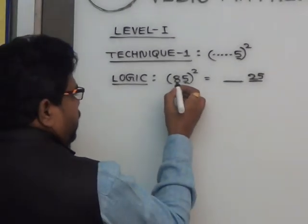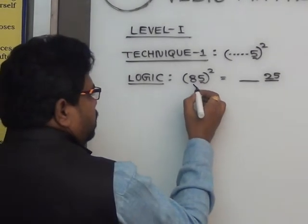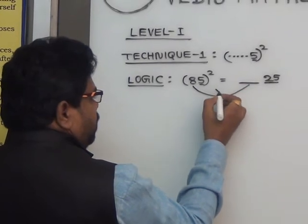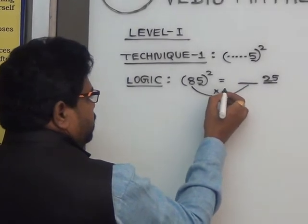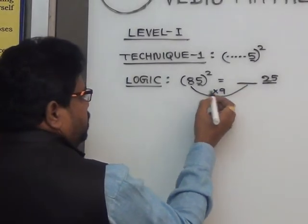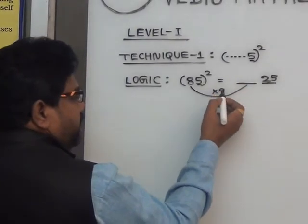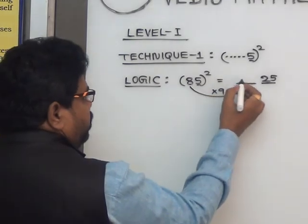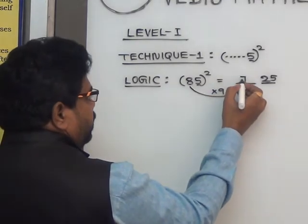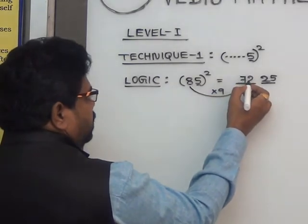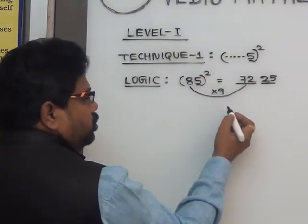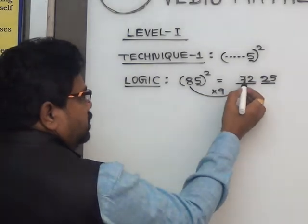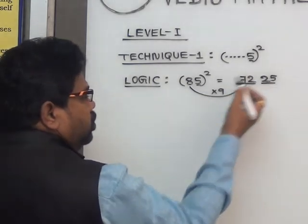So the first digits — yela ushto yemka manakku vante. Yikadai 8 undhikadha — immediate next number to multiply chayali. 8 tharwath next number is 9. 8 into 9 equals 72. So 85 square is 7225.